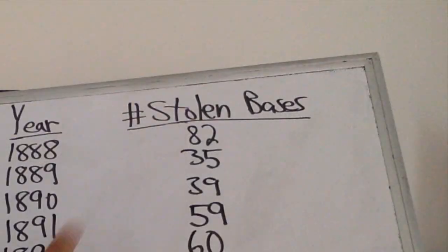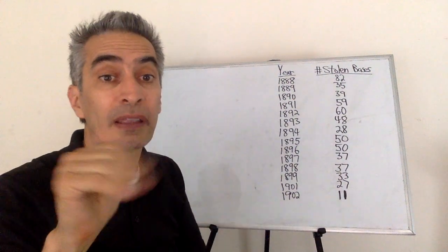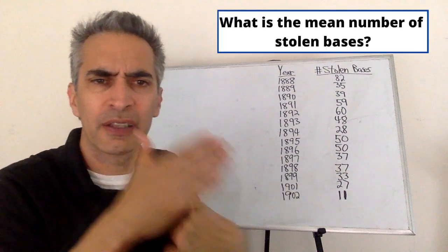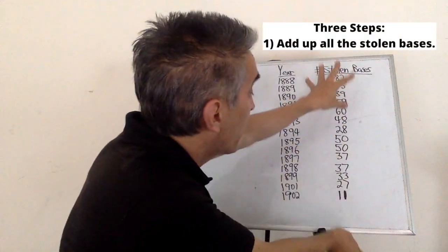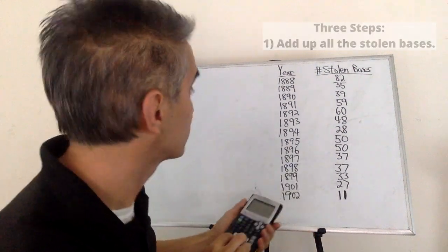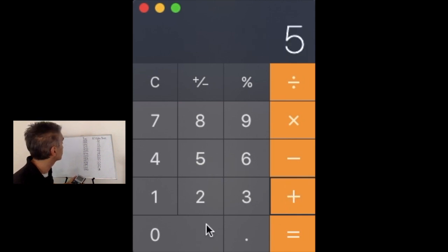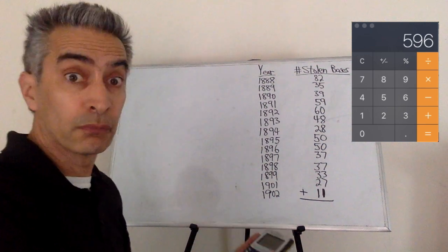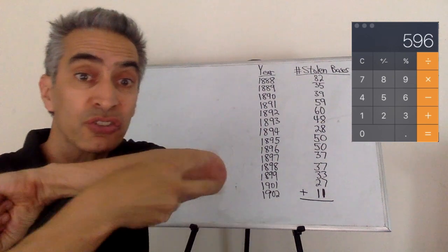This column shows us how many stolen bases he made every year. How do we calculate the mean number of stolen bases? There are three steps. The first step is we add up all the stolen bases. We can use a calculator. The total is 596 stolen bases.